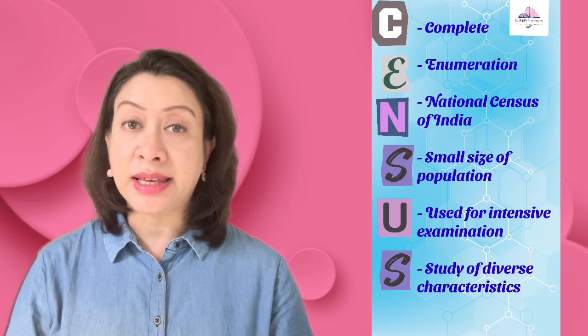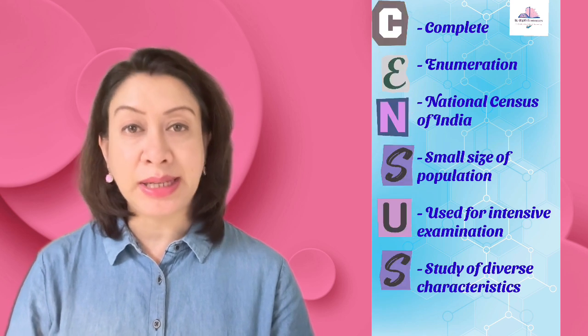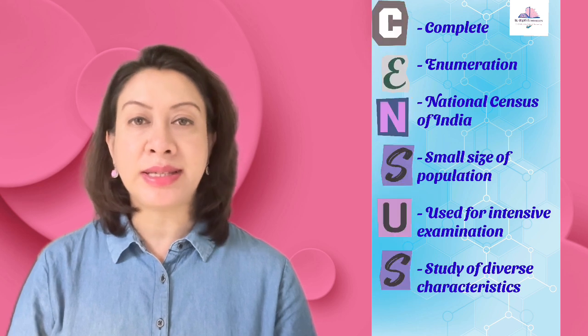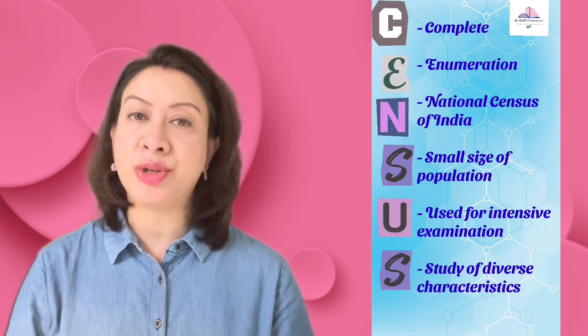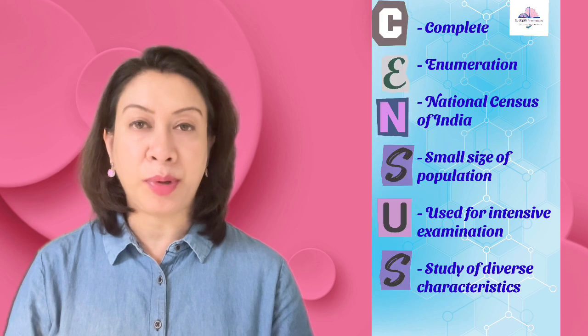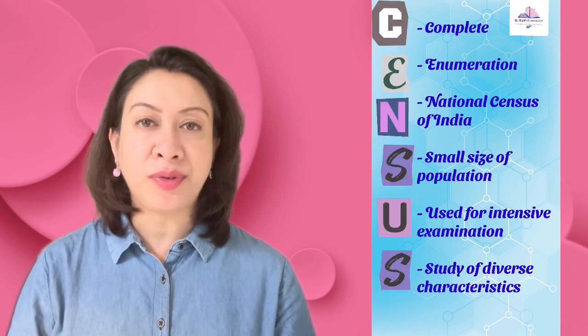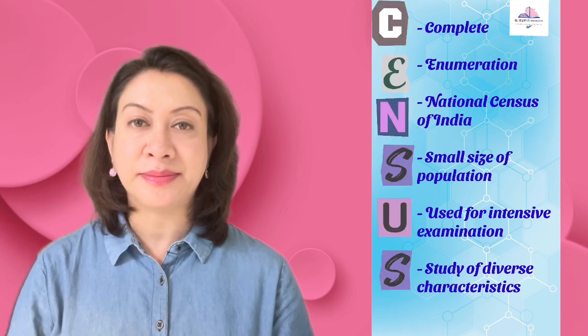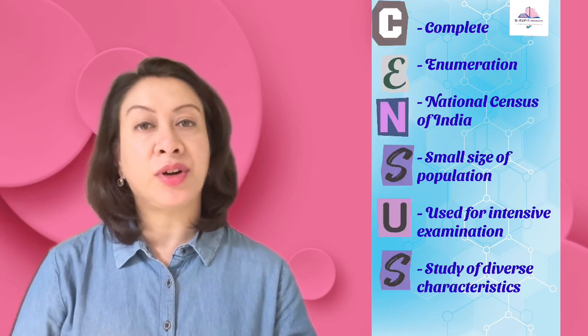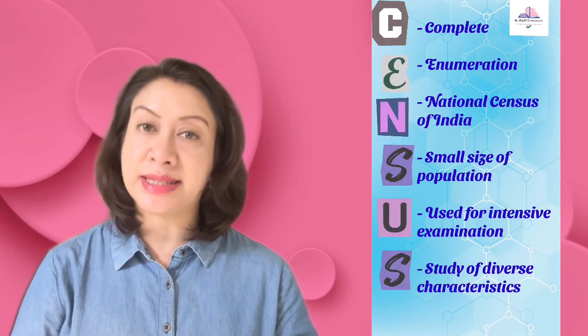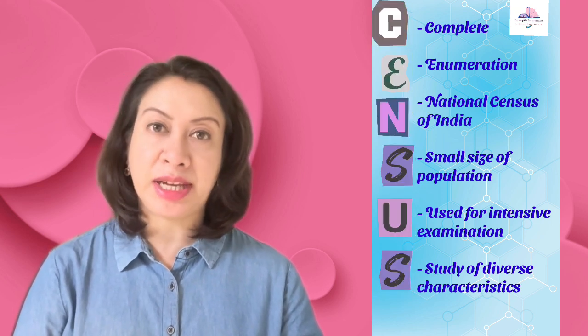Now let us use the acronym CENSUS to learn more about the Census method. C in CENSUS stands for 'complete' and E stands for 'enumeration.' The process used in the Census method involves complete enumeration of every single member of the population. Population relates to the entire set of observations connected to a particular study. N stands for National Census of India — a good example of this method is the National Census of India, which is conducted every 10 years.